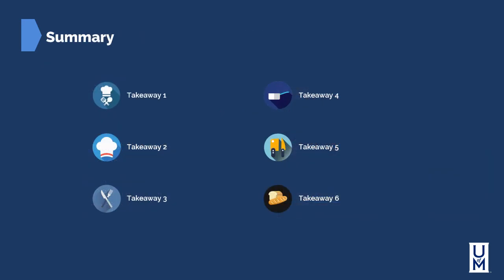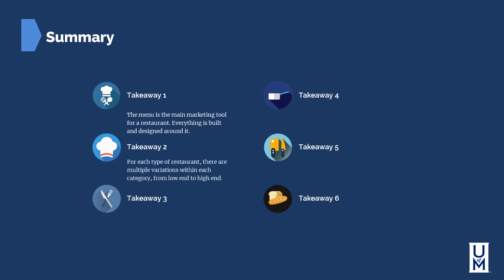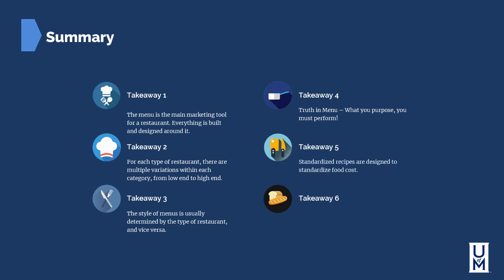In summary, the takeaways for this lesson: The menu is the main marketing tool for a restaurant — everything is built and designed around the menu, including your recipes and kitchen space. For each type of restaurant there are multiple variations within each category, from the low end to the high end. The style of menu is usually determined by the type of restaurant and vice versa. Truth in menu: what you advertise, you must perform. Standardized recipes are designed to standardize food costs. Listen to your staff — they will help market the menu and tell you what customers want.